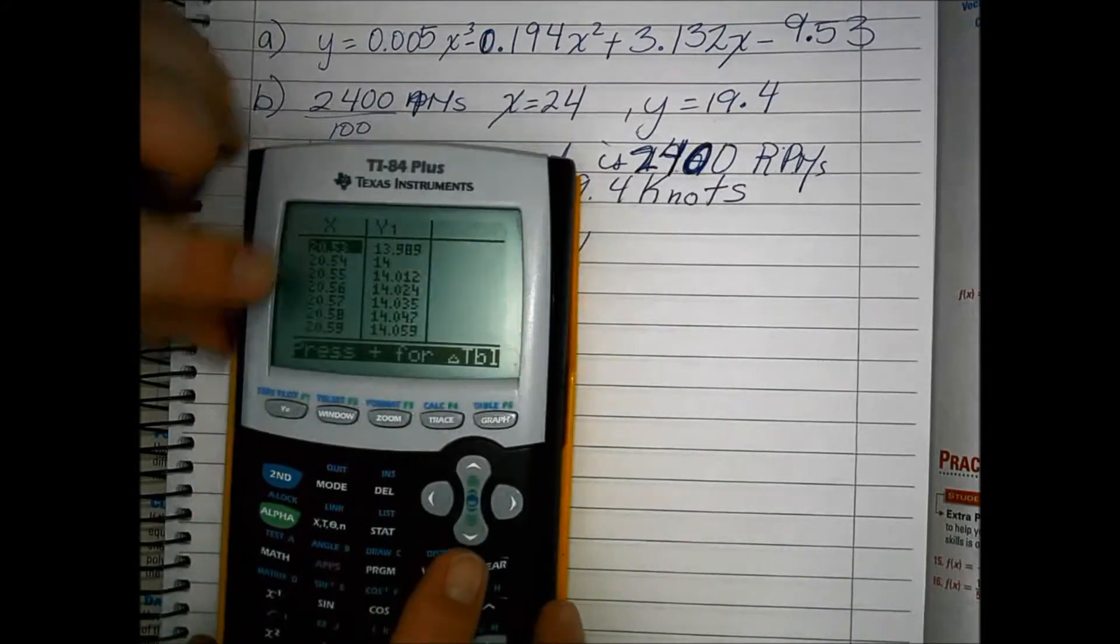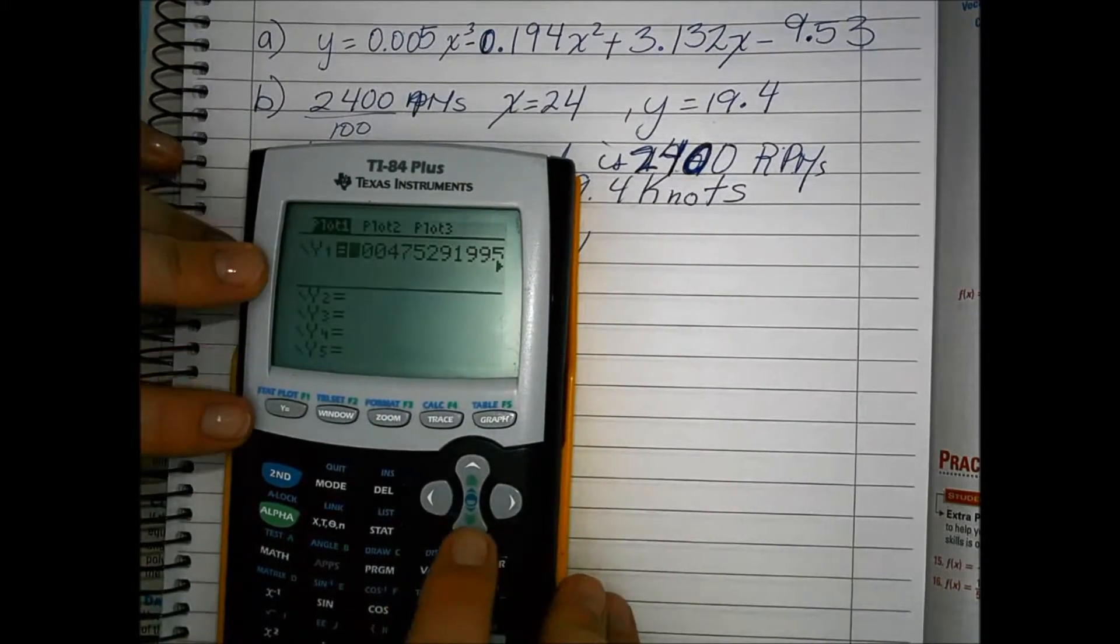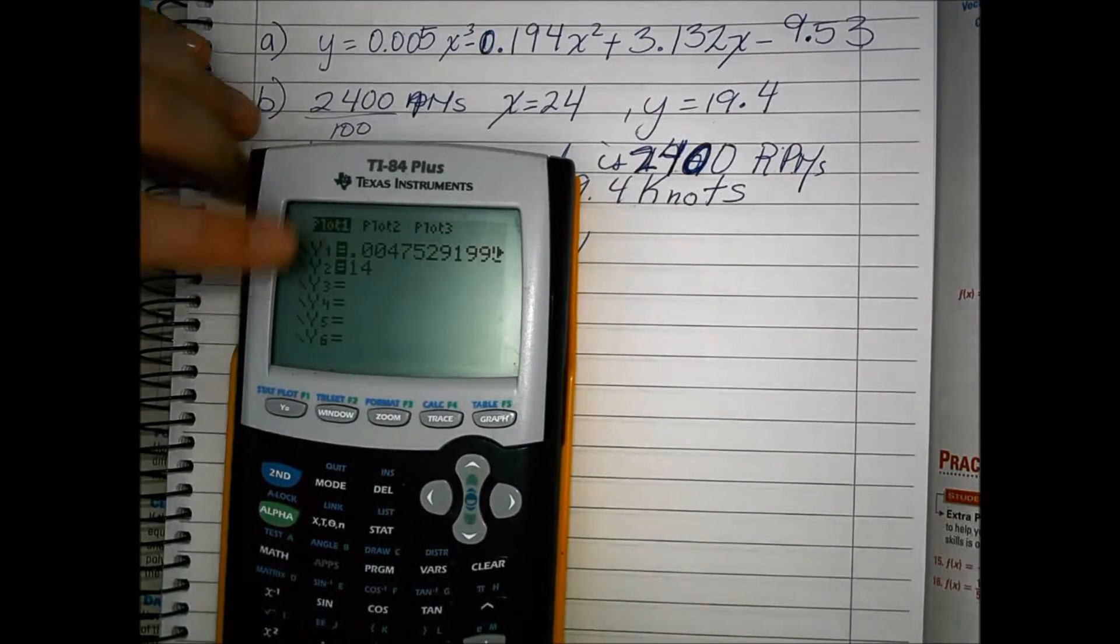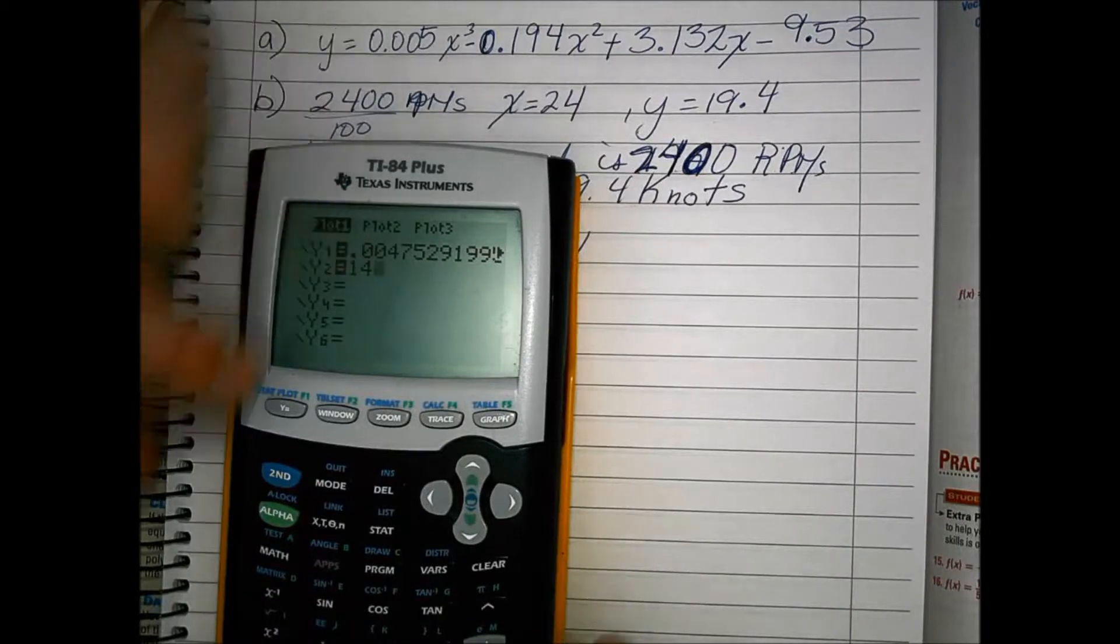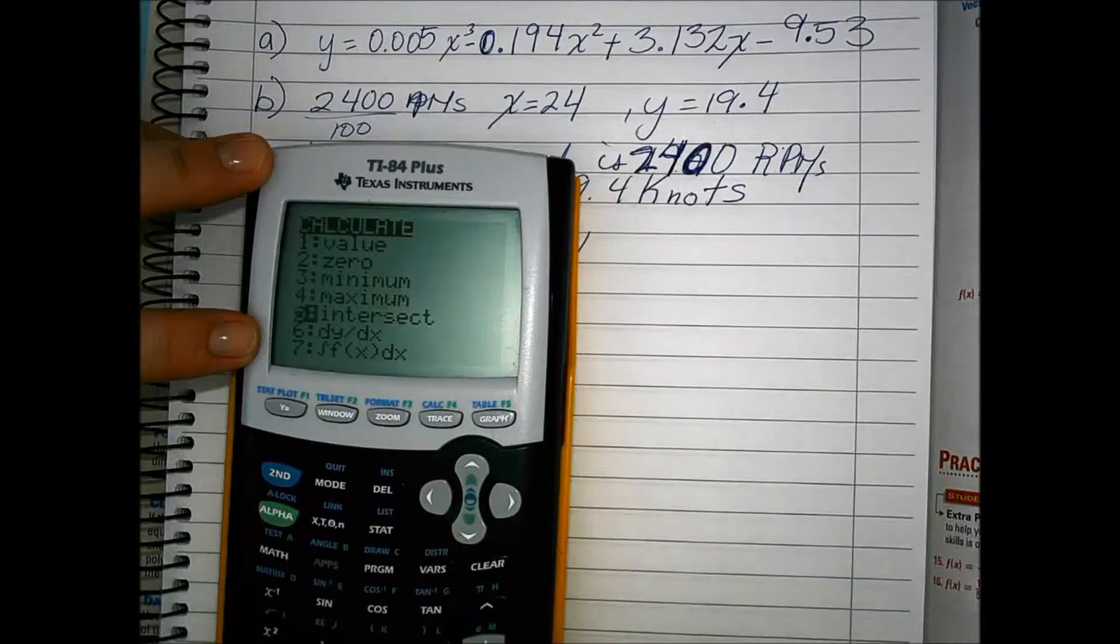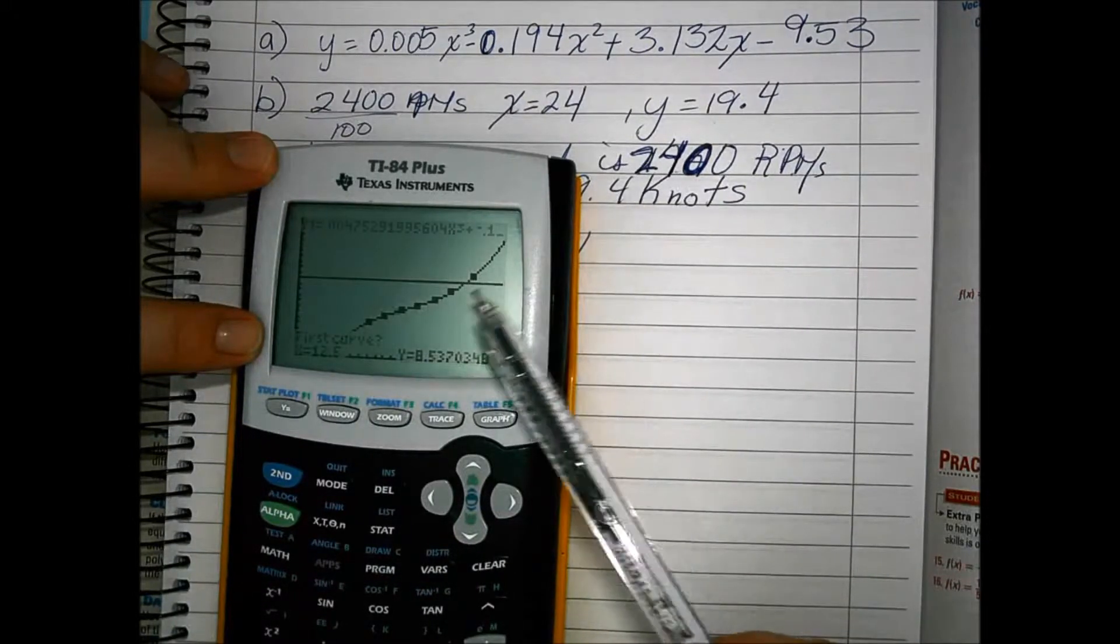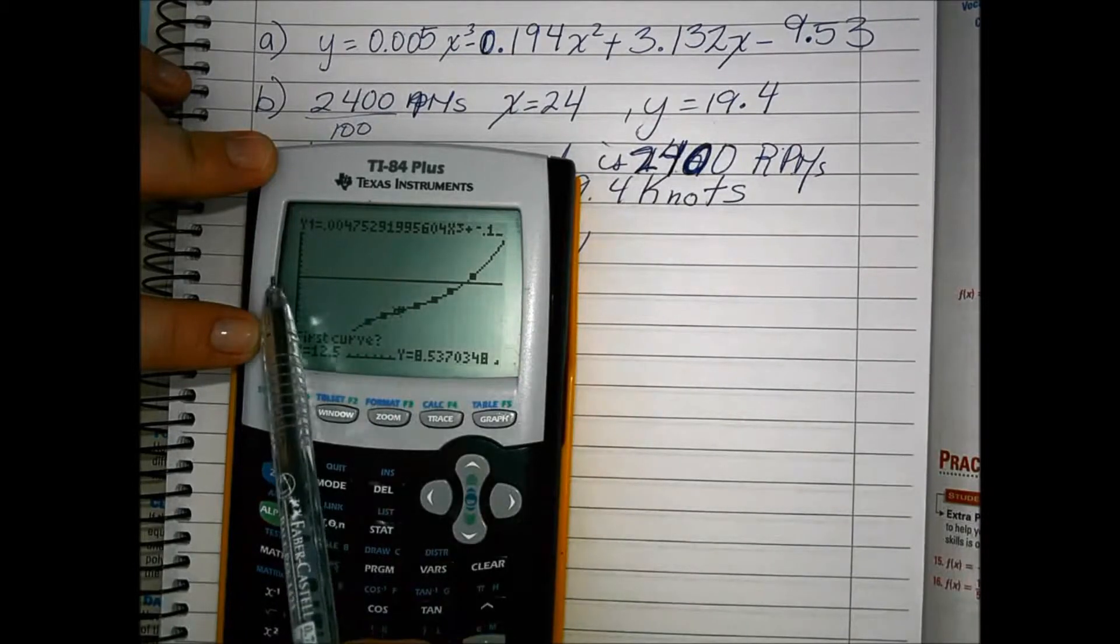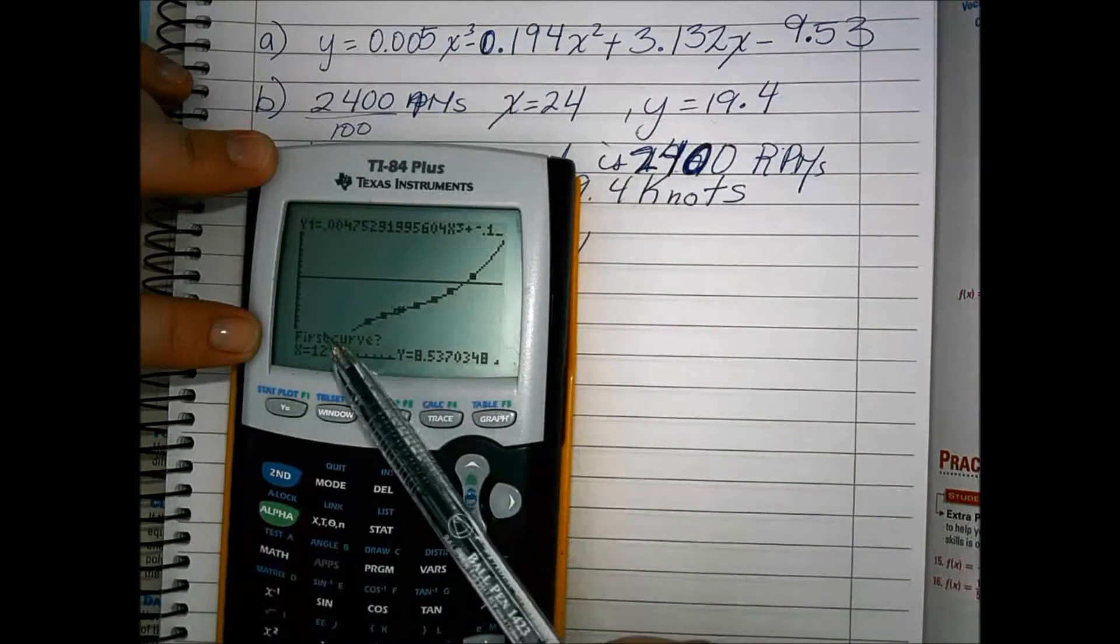The other way to do it is go to your y equals and for y2 put in 14. This represents the 14 knots. And when we go to intersect, then our table, then we can use our calculator to find that intersection of the function.